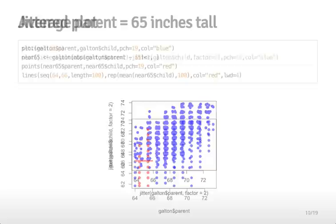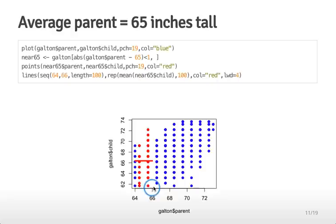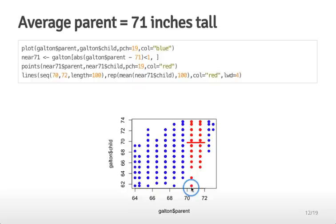We can look at different ways of predicting the child's height from the parent's height. For example, if we know the average parent height is 65 inches, the average child height for parents of that height is about 66 inches. For tall parents with an average height of 71 inches, the average child height is actually just a little lower at about 70 inches. So you get the average of the distribution for each particular subset of parent heights.